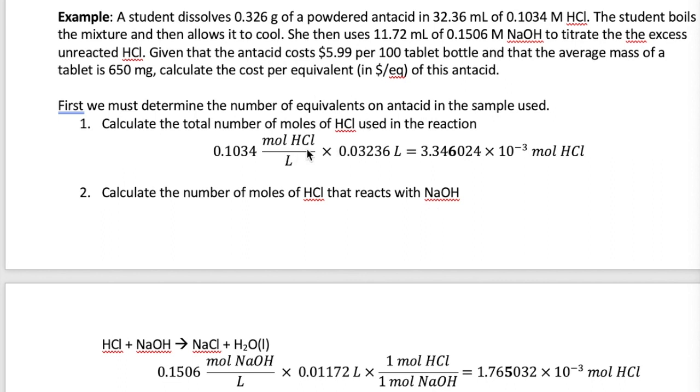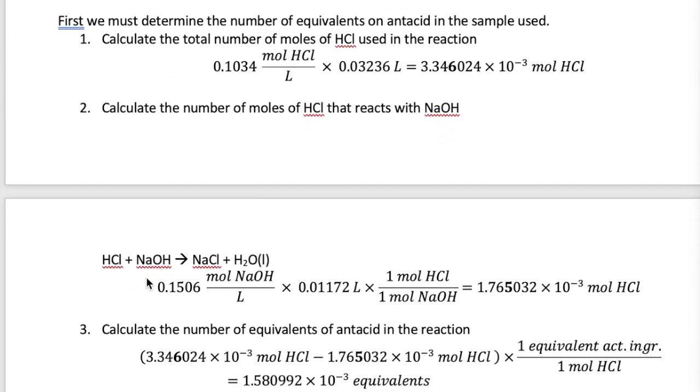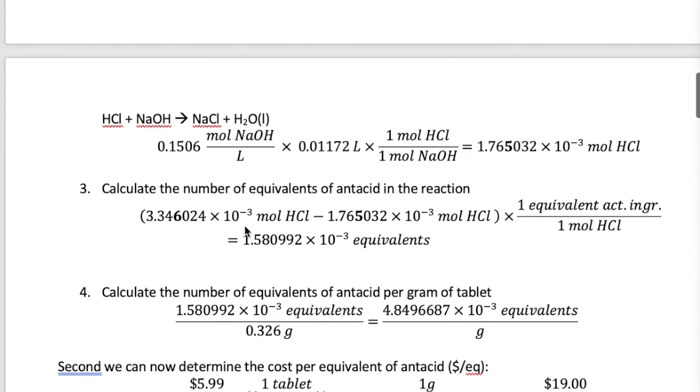So let's do the calculation. To get the total HCl, we multiply the molarity of the HCl by its volume, which gives us 3.346 times 10 to the minus 3 moles of HCl. We can then calculate the number of moles of HCl that's neutralized by NaOH. Since HCl and NaOH react in a one-to-one stoichiometry, we can calculate the number of moles of NaOH first, which is just its molarity times its volume, and then we multiply that by the stoichiometric relationship between HCl and NaOH that eventually gives us 1.765 times 10 to the minus 3 moles of HCl. Now, subtracting one number from the other and then multiplying by the relationship between equivalent and mole gives us 1.581 times 10 to the minus 3 equivalent of the active ingredient.